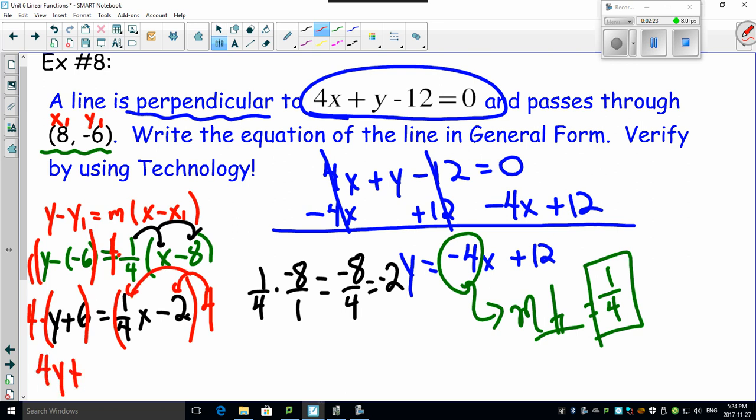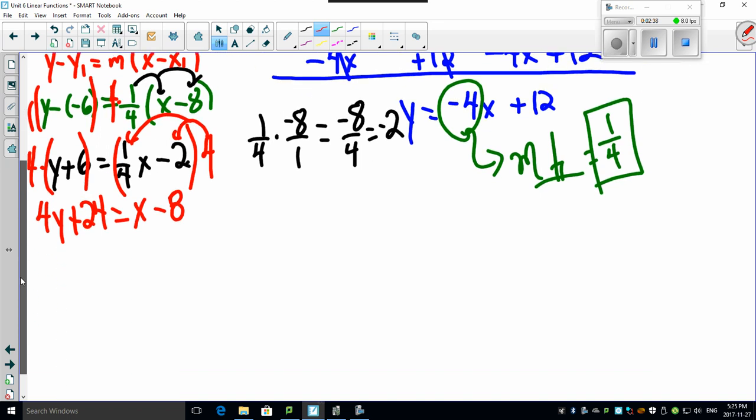4y plus 4 times 6 is going to be 24. If I remember correctly, 4 times a quarter is just 1. 4 times negative 2 is minus 8. Okay. Almost done. Check this out. This is beautiful.